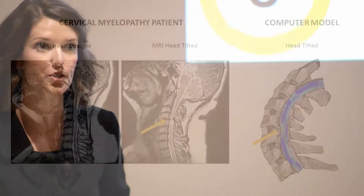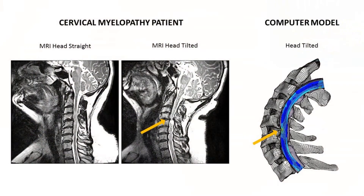Here we have an MRI of a patient with cervical myelopathy. On the left the patient is in a neutral position with his head straight, and on the right he has moved his head and neck backwards. You can see how thin the spinal cord has become as he moves his head and neck backwards.